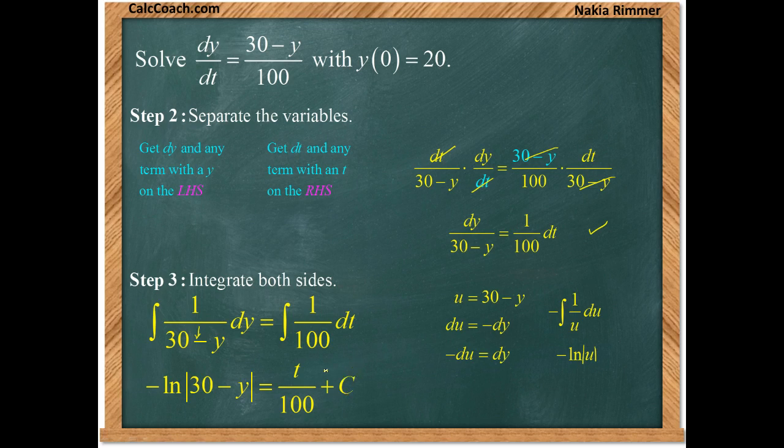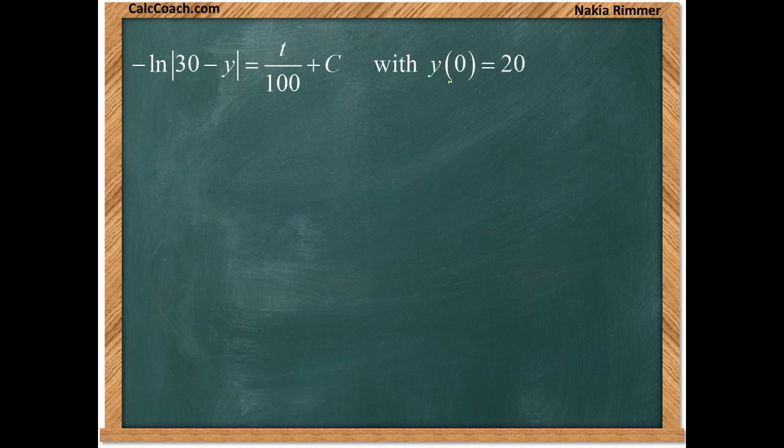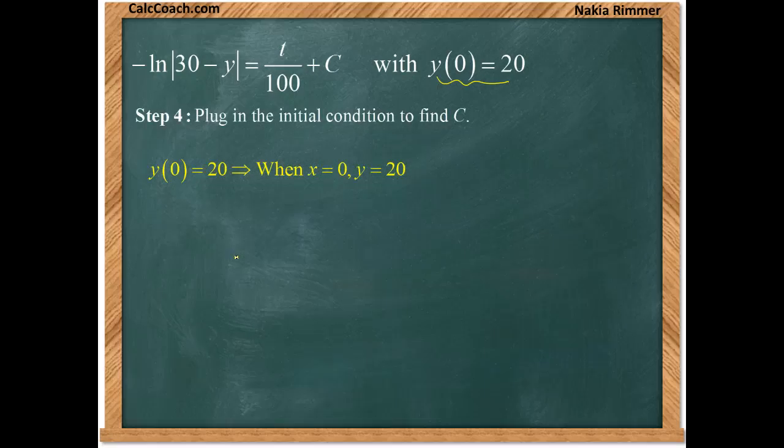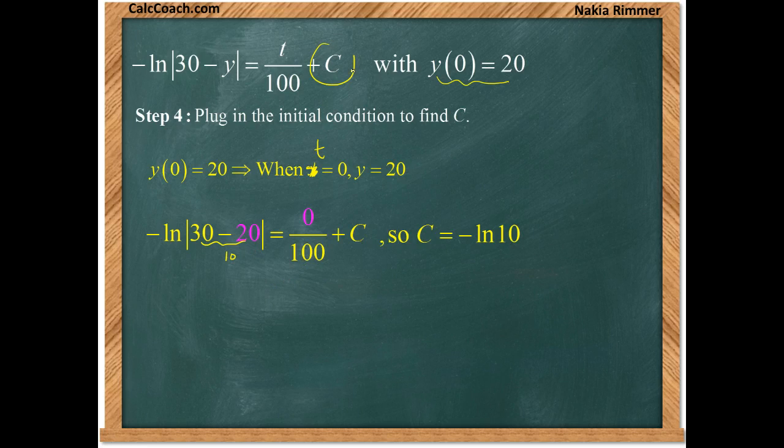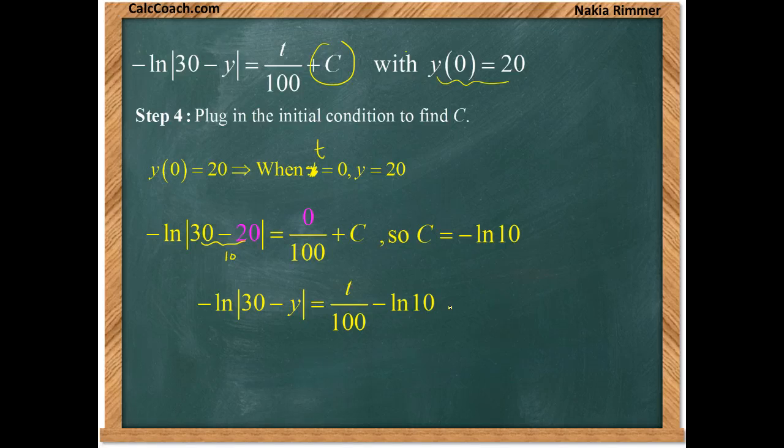We just need the condition to help us get the c, and we'll be almost done. So y(0) is equal to 20 tells us that we're going to go plug this condition in that when t is 0, y is 20. We found that out. When t is 0, y is 20. So we plug it in, 0 plus c on the right-hand side, and negative the natural log of 10. That's what c is, negative the natural log of 10. Immediately replace your c in your equation, and this is going to be one form of your solution. We've got to make sure that we answer the question that's being asked.